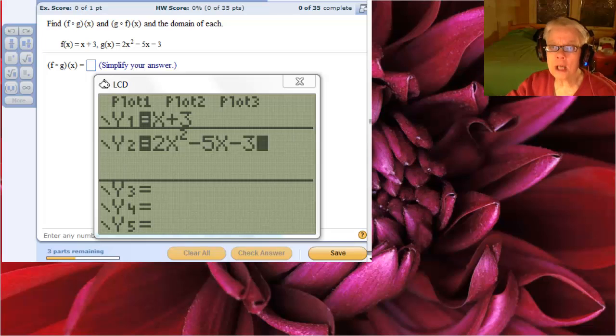We're going to be talking about f and g and composing them. Here's f, it's y1, and y2 is 2x squared minus 5x minus 3. That's what g is, and you see them defined up here.